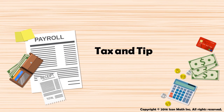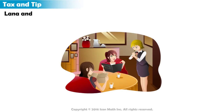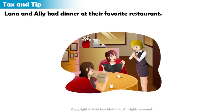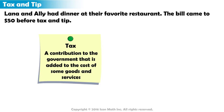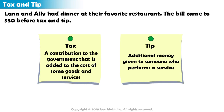Tax and Tip. Lana and Allie had dinner at their favorite restaurant. The bill came to $50 before tax and tip. Tax is a required contribution to the government that is added to the cost of some goods and services. Tip is additional money given to someone who performs a service. Both tax and tip are calculated as a percentage of the total bill.